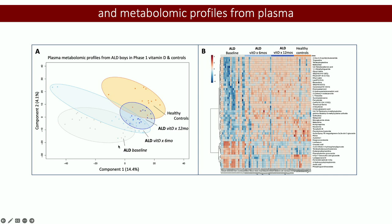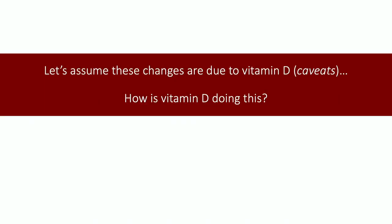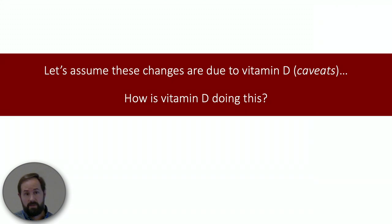We also looked at the evolution of essentially thousands of metabolomic markers, which started collectively at baseline and in this analysis appeared to move closer to controls — which again we think would be favorable. So let's assume for the moment these changes are due to vitamin D. Then how is vitamin D doing these things? From here we moved on to try and get a molecular analysis, with funding from several groups including UrbidERCI, ALD, the Lucas Project, and the Stanford Maternal Child Health Research Institute.